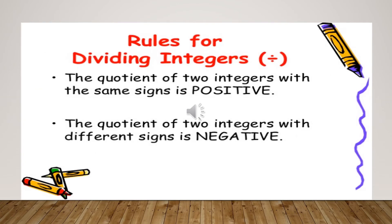Here are the rules for the division of integers. The quotient of two integers with the same sign is positive. It means that if I am going to divide minus 4 by minus 4, I will get a positive answer, that is 1. Another rule is that the quotient of two integers with different signs is negative — for example, minus 2 divided by 2 gives a negative answer.